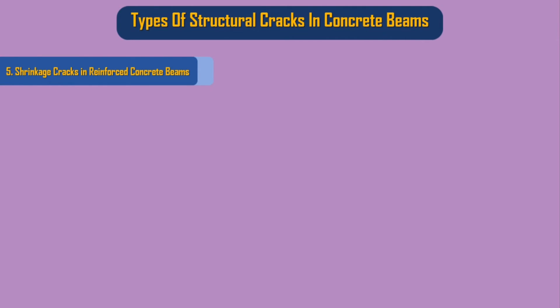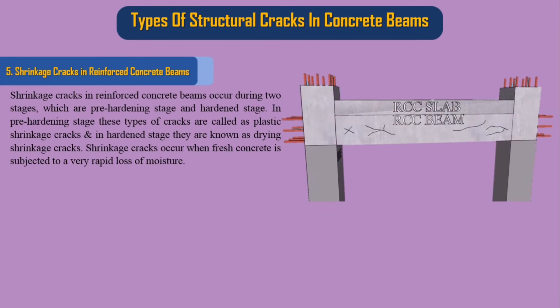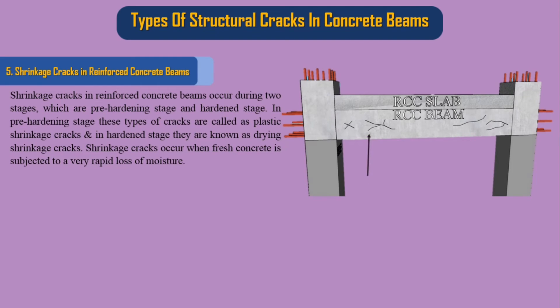Shrinkage cracks in reinforced concrete beams occur during two stages: the pre-hardening stage and the hardened stage. In the pre-hardening stage, these cracks are called plastic shrinkage cracks, and in the hardened stage they are known as drying shrinkage cracks.